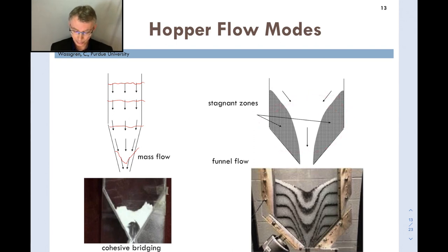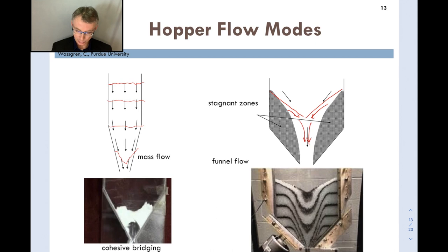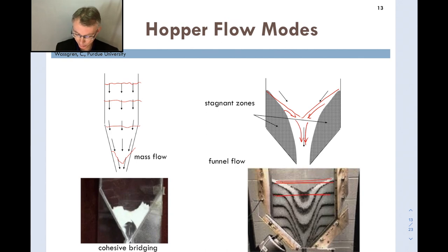In funnel flow, material flows through a central channel or 'funnel,' with stagnant regions building up on the sides near the wall. The free surface takes on a persistent V-shape as the material avalanches down and into the central channel. A photograph illustrates this clearly: glass beads (white layers interspersed with painted black layers) show the stagnant wall regions and flowing central channel after discharge. The stagnant regions are problematic — for biological materials, for example, they can decay.